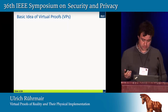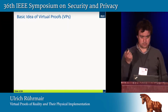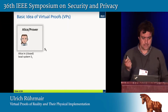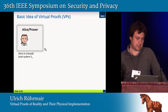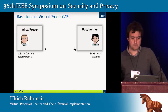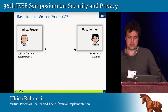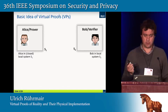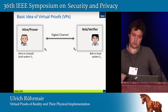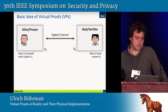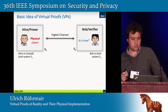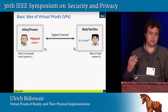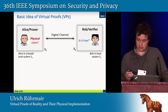What are these Virtual Proofs all about? We have two parties interacting with each other: Alice acting as the prover, sitting in a local system S1, and Bob acting as the verifier, sitting in a local system S2. Both are connected via a digital communication line. Alice makes a physical claim concerning her system S1 or certain objects present in S1, and Bob would like to verify that claim by communication over the digital channel.